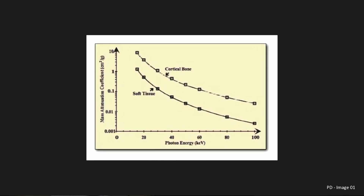In this image we can see the typical mass attenuation coefficient curves for soft tissue and cortical bone as compared to photon energy measured in KEV. If we look at these values for each of these tissue types, at 40 and 60 KEV we can see the values obtained. Note that while the absolute value changes, the difference between them also changes. DXA exploits this difference in absolute and relative values to calculate DXA images.